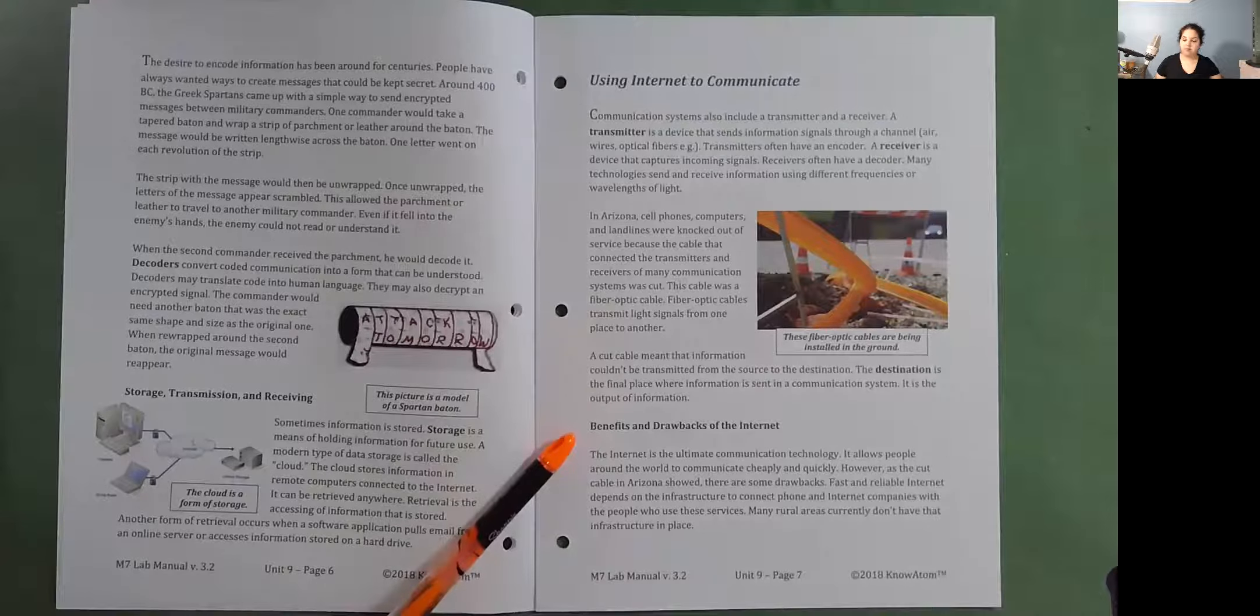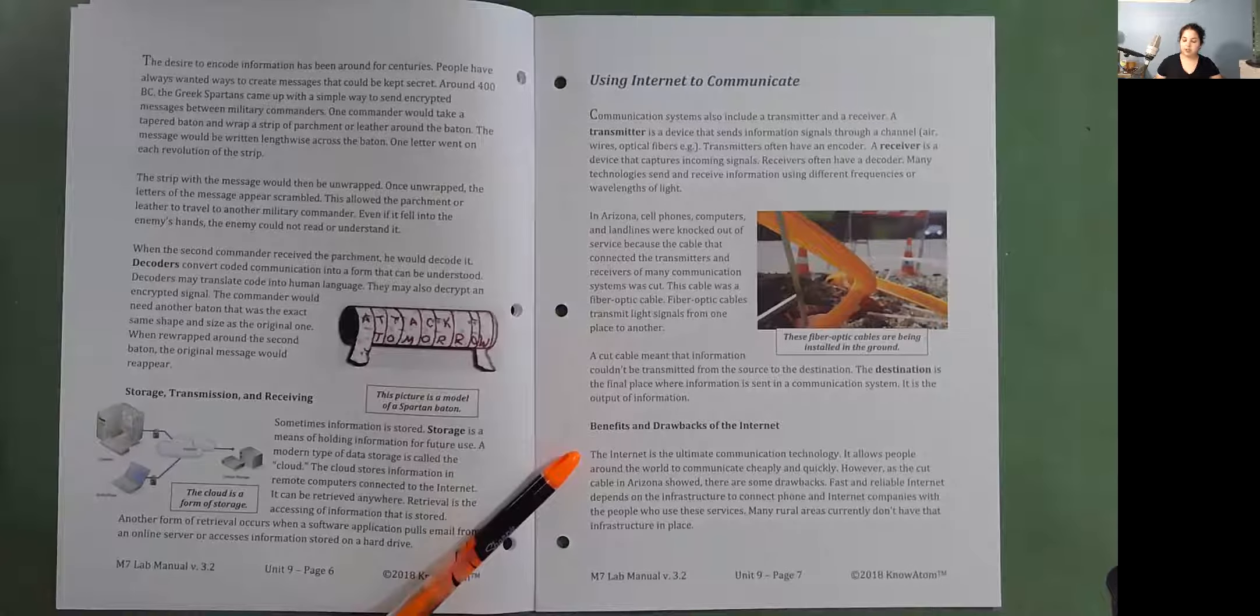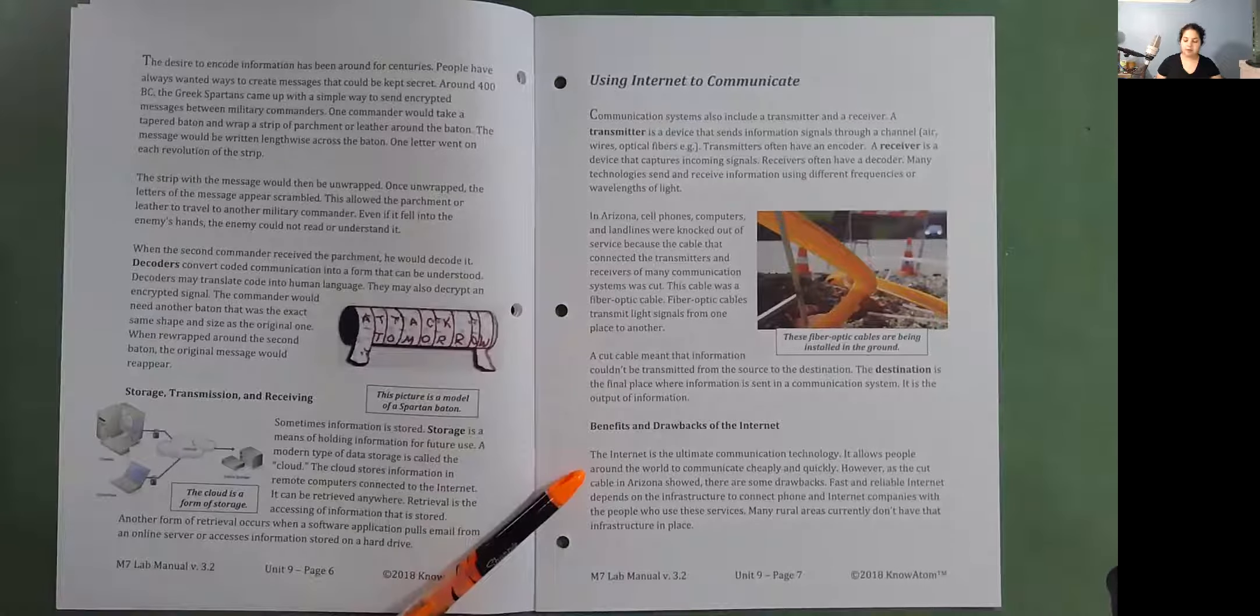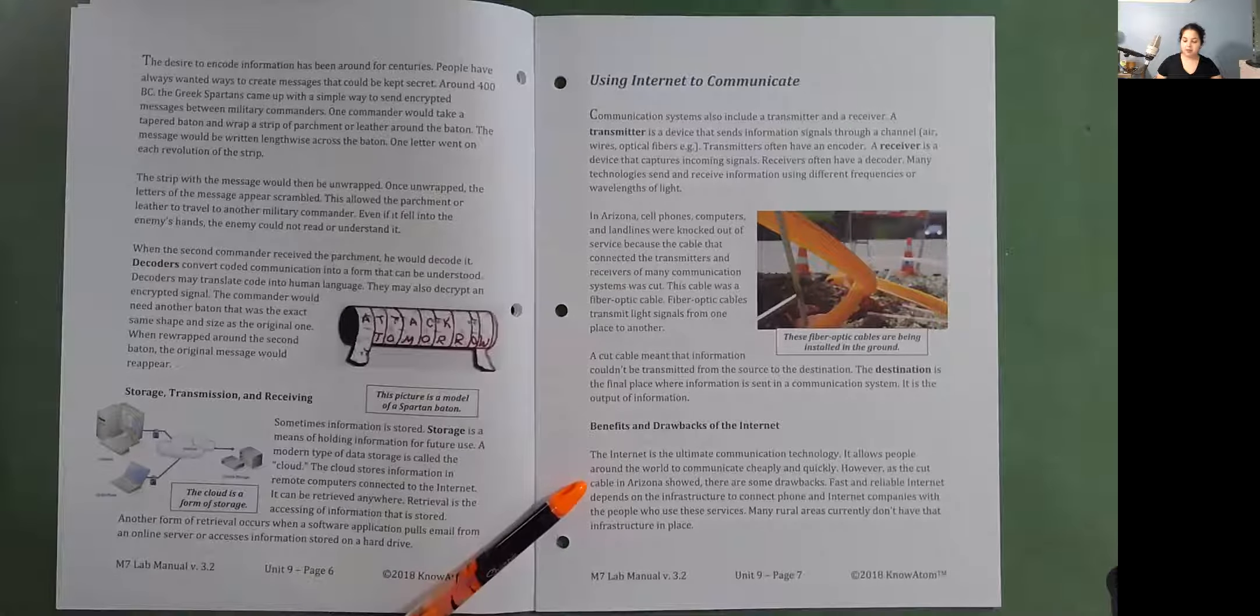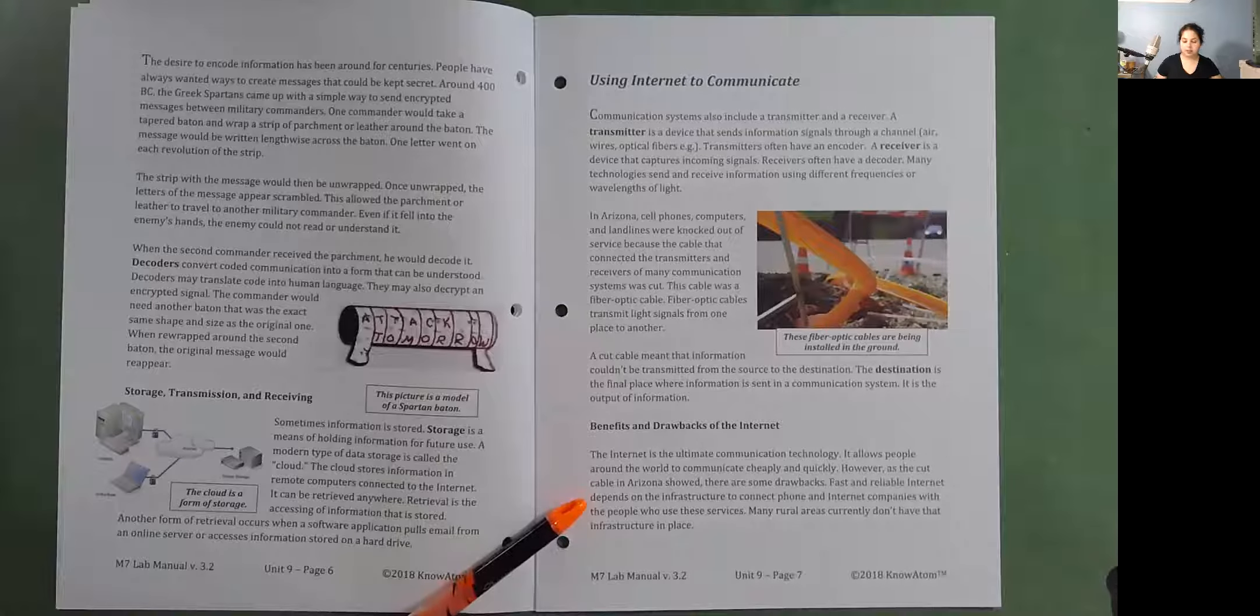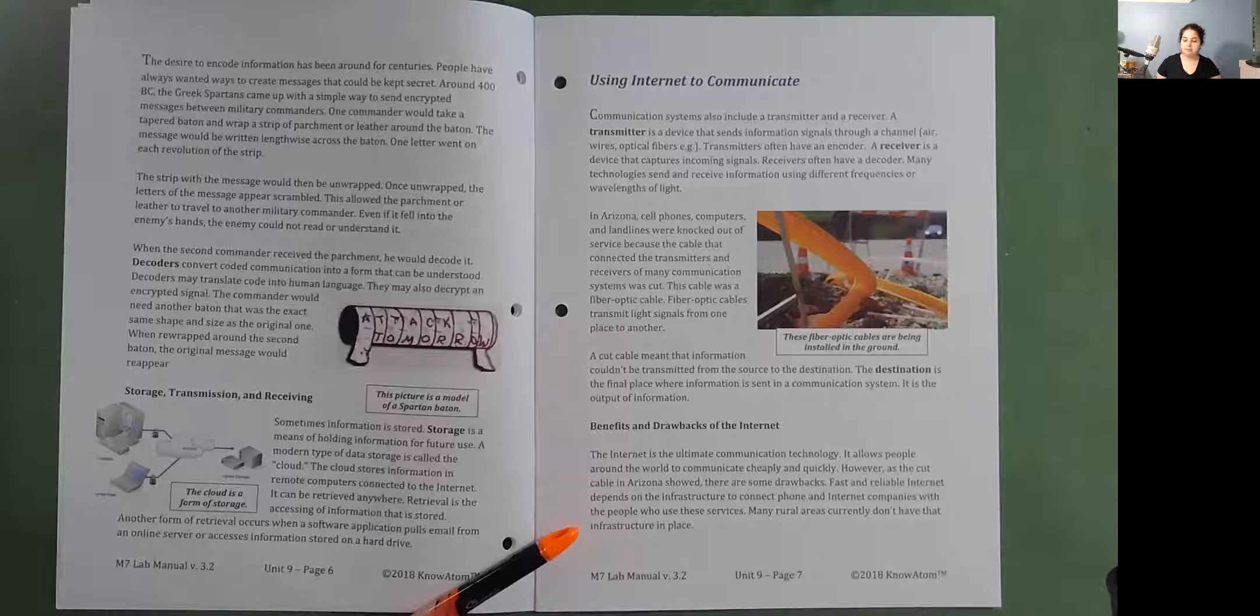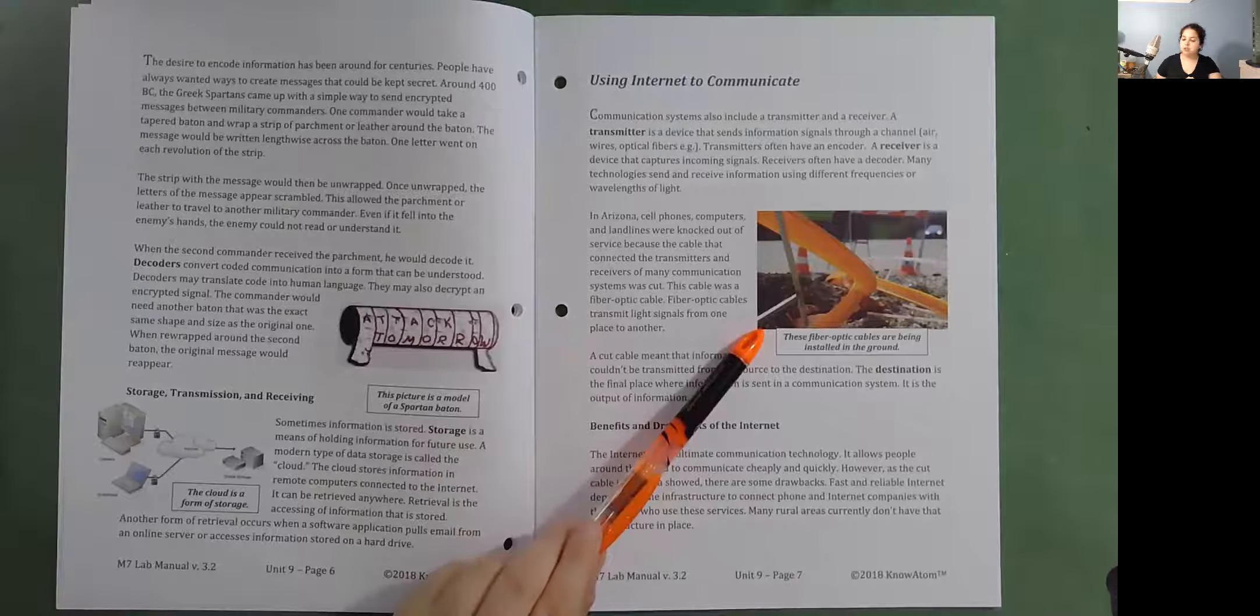Benefit and drawbacks of the internet. The internet is the ultimate communication technology. It allows people around the world to communicate cheaply and quickly. However, as the cut cable in Arizona showed, there are some drawbacks. Fast and reliable internet depends on the infrastructure to connect phone and internet companies with the people who use these services. Many rural areas currently don't have that infrastructure in place. These fiber optic cables are being installed in the ground.